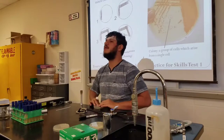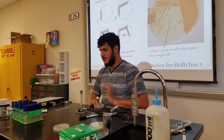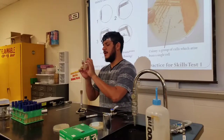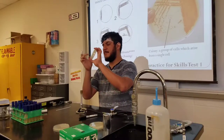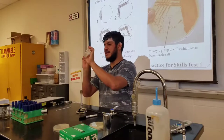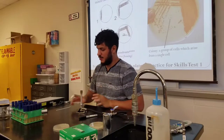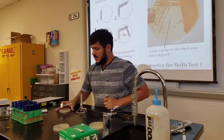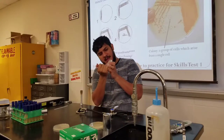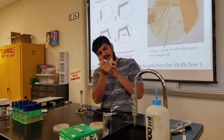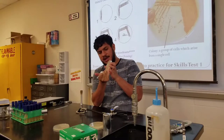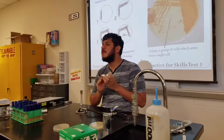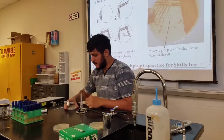Let me close it and put it down. First thing we also do is label. When we label the plate, we want it labeled on the bottom part of the plate, not the lid, and I will explain why later. I'm going to label on the edge around the plate so I don't block the view of my results with the microorganism.